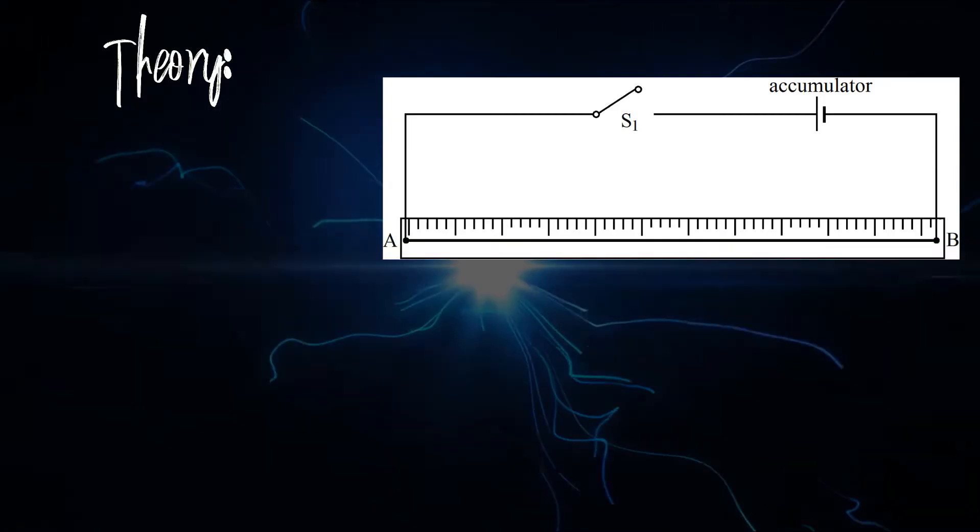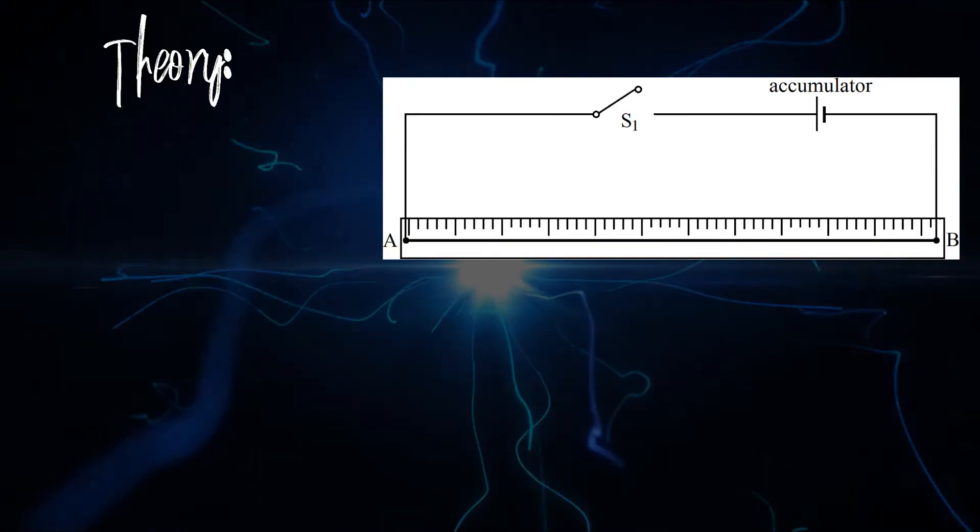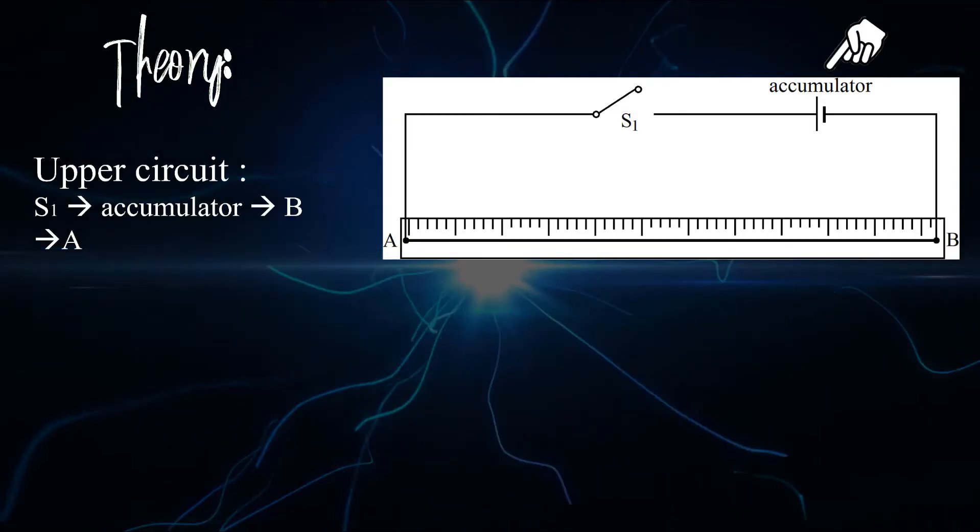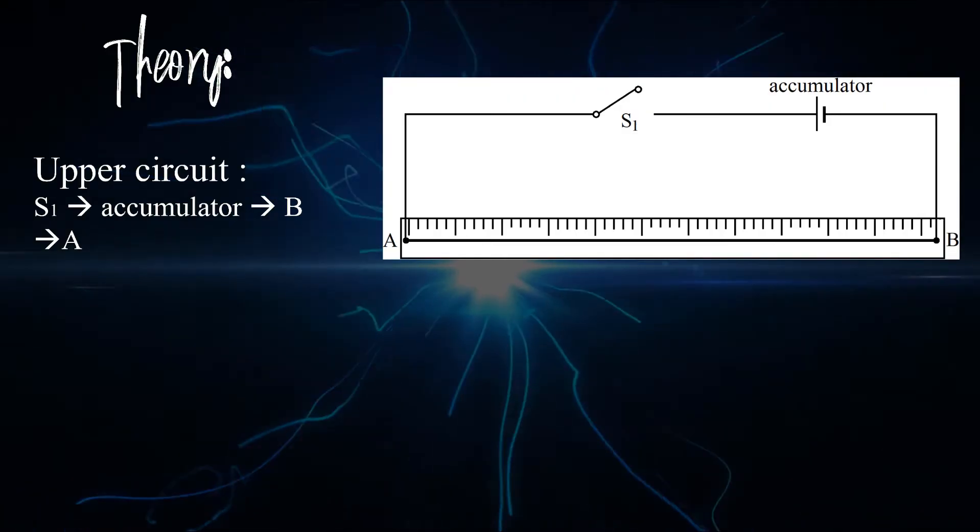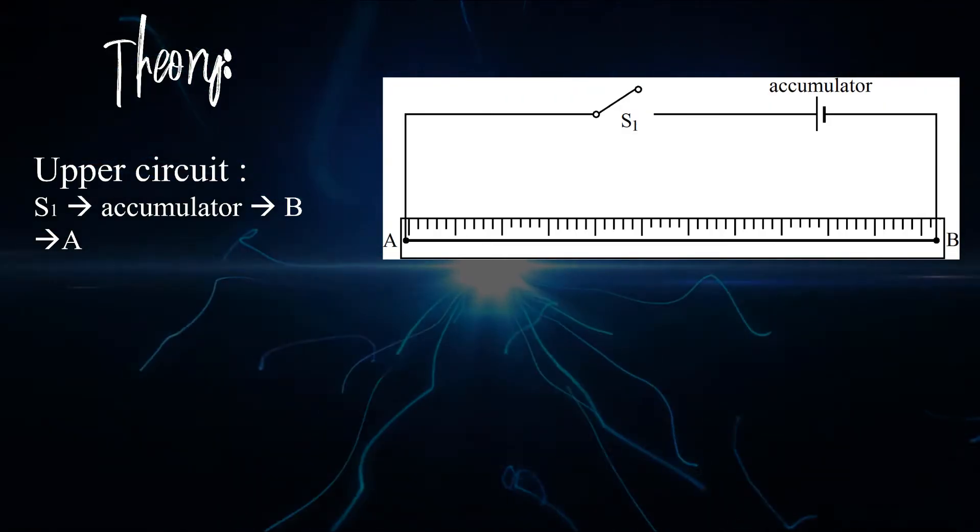This is a circuit diagram for the upper circuit. It consists of switch S1, accumulator, then connected to point B of a Wheatstone bridge, to point A, and back to switch.